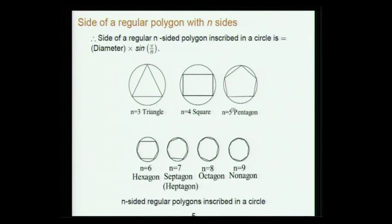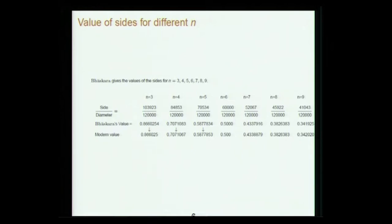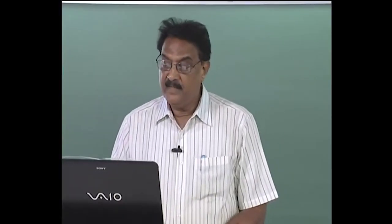For n equal to 3 (triangle), square, pentagon, hexagon, heptagon, octagon, or nonagon, the value Bhaskar argues is 103923 divided by 120000, 84853 by 120, etcetera. We can put this in decimal form. The modern value using 2R·sin(π/n) is very accurate. The other way is also possible — that is what Ganesha Devayana had done: from the side of the polygon to get the value of circumference by diameter.